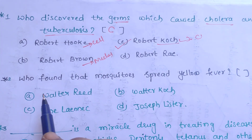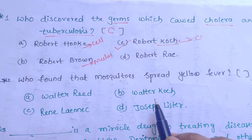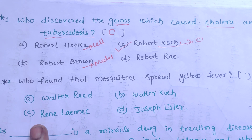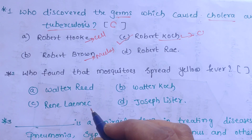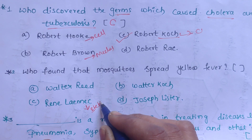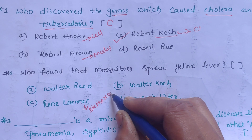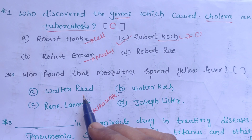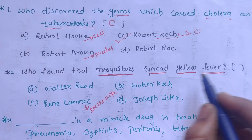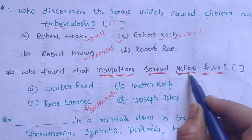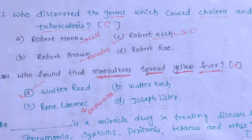The next question is: who found that mosquitoes spread yellow fever? A. Walter Reed, B. Walter Koch, C. Rene Laennec, D. Joseph Lister. Rene Laennec discovered the stethoscope. Walter Reed discovered that mosquitoes spread yellow fever. So our correct answer is A, Walter Reed.